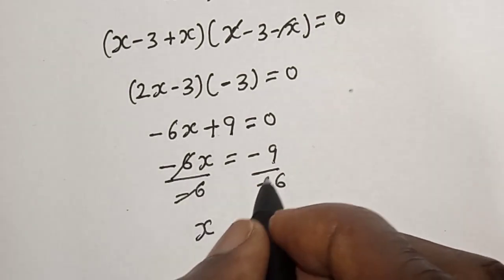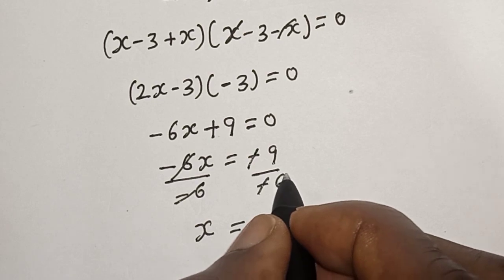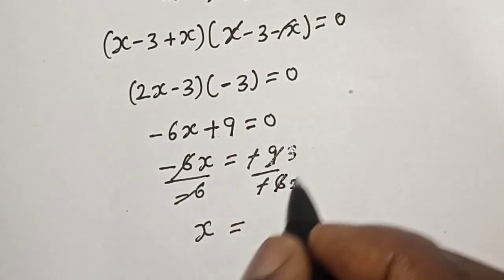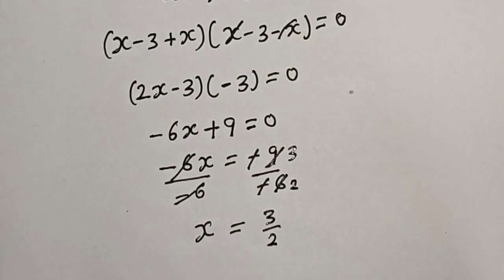x is equal to, this minus cancels this minus, 3 over 2.